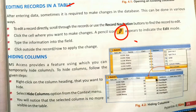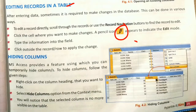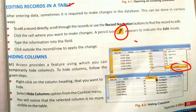Hiding columns: MS Access provides a feature using which you can temporarily hide columns. To hide a column, right-click on the column heading that you want to hide, then click the Hide Column option from the context menu. You will notice that the selected column is no longer visible in the table.